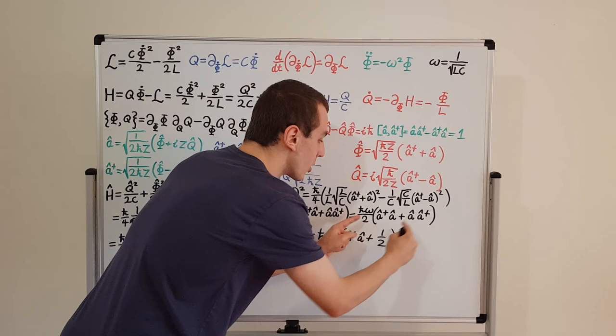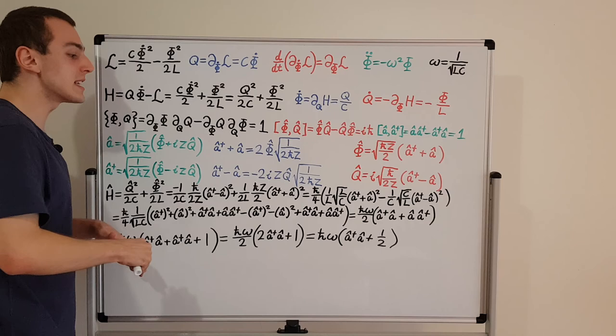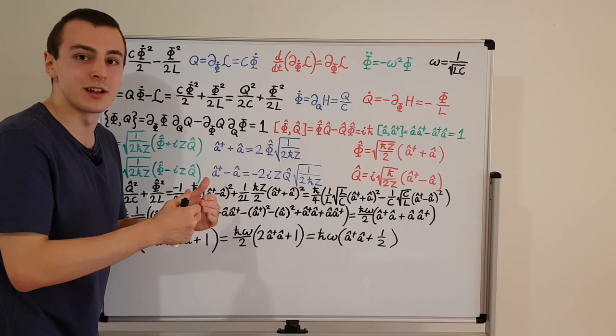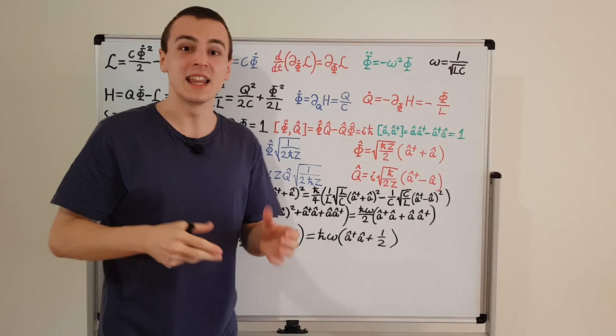In the next video, we're going to take this form with a dagger a plus a a dagger and substitute the definitions inside to do the reverse process. After that, we'll look at some other Hamiltonians: not just the LC circuit as a quantum harmonic oscillator, but also the transmon qubit and the dualmon qubit — important physical systems described in a similar way, with applications in quantum computing.